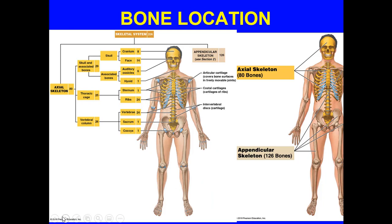The axial skeleton is essentially everything along the midline — the vertebrae, the ribs, and the skull. The functions of the axial skeleton include protecting the spinal cord, the heart, the lungs, and the brain. The appendicular skeleton is pretty much revolving around limbs that are connected to the axial skeleton.